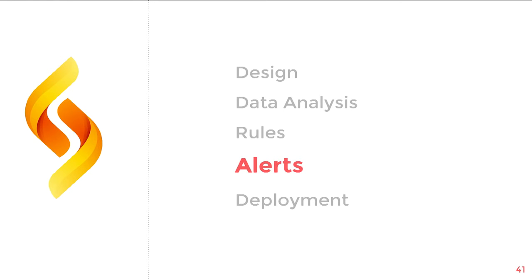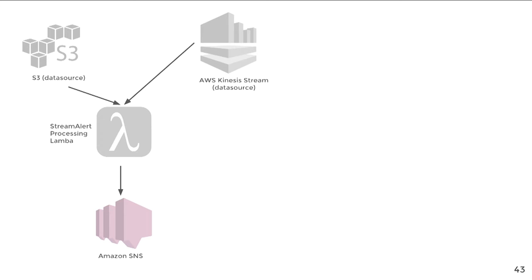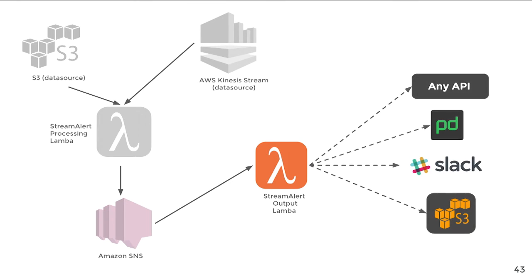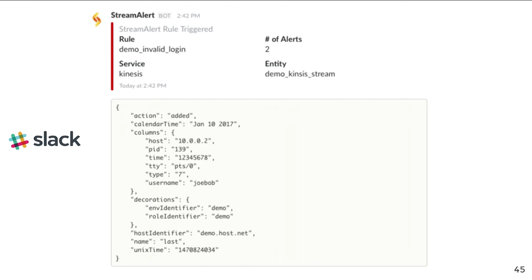Now that we know how rules work, let's talk about how alerting works. In our previous rules, we had an output defined as PagerDuty. When a match occurs, alerts get bundled together and sent to a service called AWS SNS — Simple Notification Service — which routes alerts to our defined outputs. After alerts are written to SNS, that triggers another Lambda function which filters and then sends to our incident management or communication services. Out of the box, we support PagerDuty, Slack, and S3 as outputs, but since this is just Python, you can extend it to support any type of API. In PagerDuty, we get a lot of metadata around our alerts for an analyst to use as context, and in Slack we get the same type of alert.